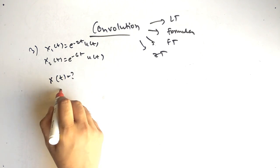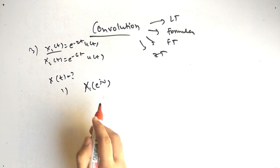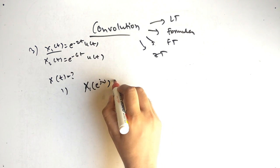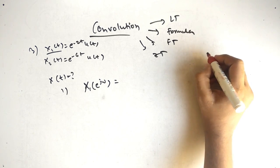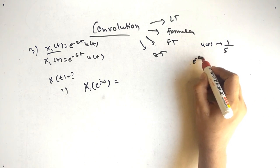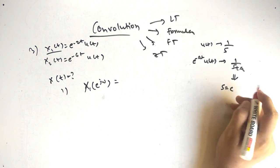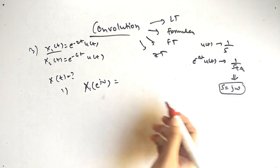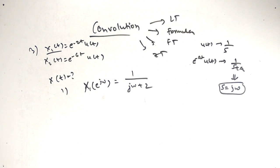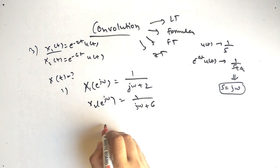The first step is to apply the Fourier transform. Remember, capital letters denote the transformed versions. Previously in Laplace transform, e raised to minus at times u of t was replaced by 1 by s plus a. Here we replace s by j omega, so the formula becomes 1 by j omega plus a. So X1 of j omega equals 1 by j omega plus 2, and X2 of j omega equals 1 by j omega plus 6.